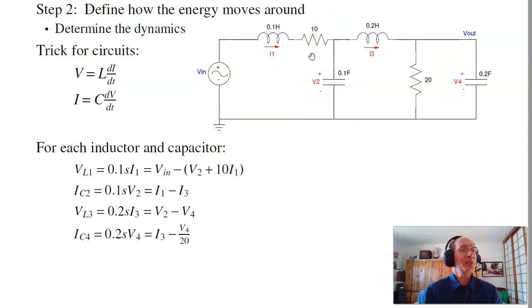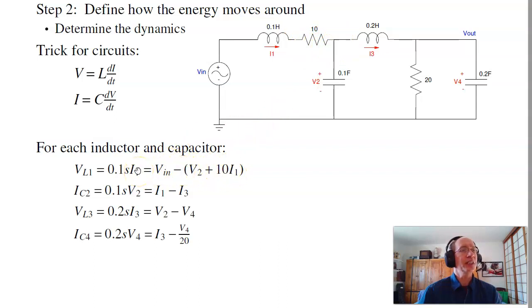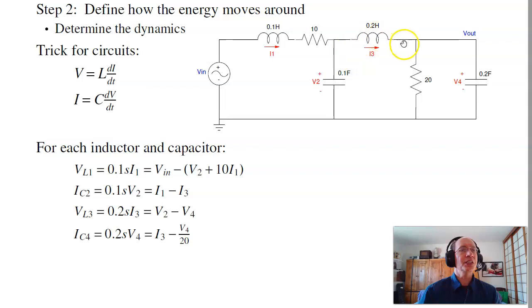Next, I want to find the dynamics — so here I'll write four coupled differential equations. For an inductor, v equals L·di/dt. For a capacitor, i equals C·dv/dt. The voltage across the first inductor is L·di/dt, which equals V_in minus 10·i1 minus v2. For the capacitor, the current going into the node is C·dv/dt, which equals i1 minus i3. The second inductor voltage is v2 minus v4. The last capacitor gets current i3 minus v4 over 20. So that gives me four coupled differential equations.